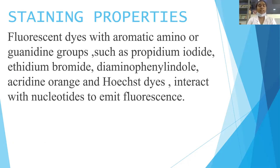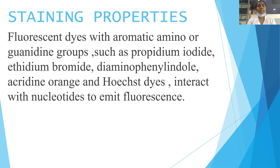Staining properties: fluorescent dyes with aromatic amino or guanidine groups — such as propidium iodide, ethidium bromide, diamino phenylenrol, acridine orange, and Hoechst dyes — interact with nucleotides to emit fluorescence. These dyes interact with nucleotides to emit fluorescence. That covers the staining properties.